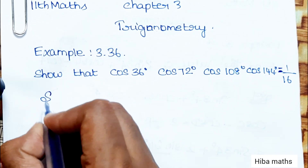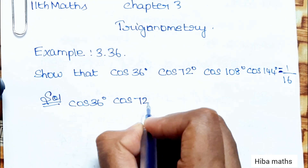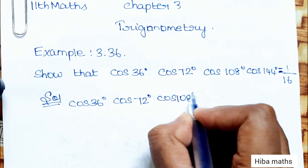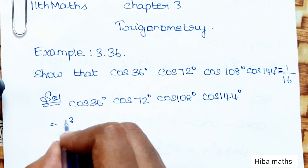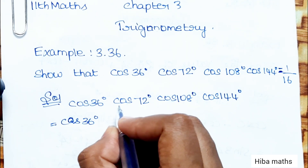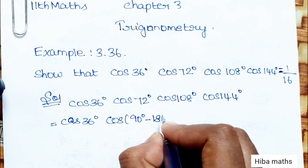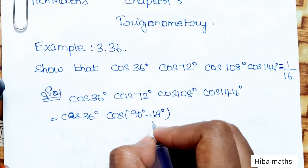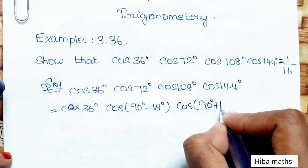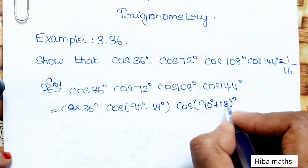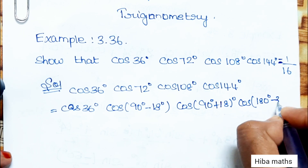Solution: we solve the product cos 36° · cos 72° · cos 108° · cos 144°. Now, cos 108° can be written as cos(90° + 18°) and cos 144° as cos(90° + 54°), applying standard angle transformations.